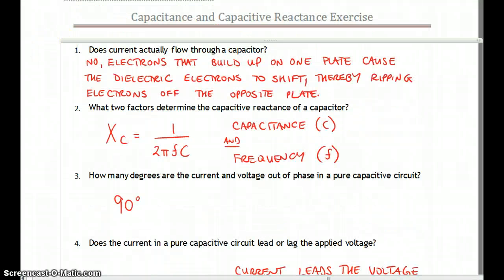So first one, does current actually flow through the capacitor? Well, it's a yes or no question, but the answer is no. Electrons basically build up on one plate, they cause the dielectric electrons to shift over, and they rip electrons off the opposite plate.